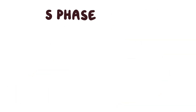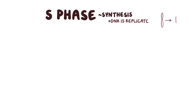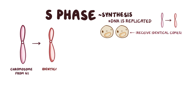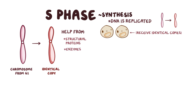If the cell does get the go-ahead at the G1 checkpoint, it enters the S phase. S stands for synthesis, because during this phase, DNA is replicated so that each daughter cell receives identical copies of the genetic material. So for each chromosome from G1, an identical copy is created. This happens with the help of a number of proteins, both structural proteins and enzymes, as well as energy.